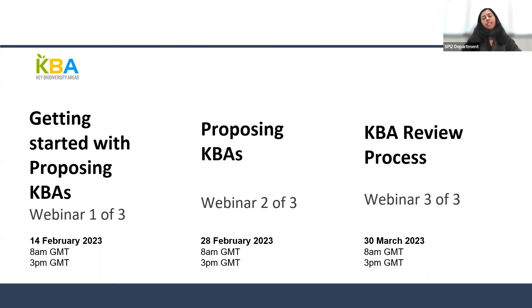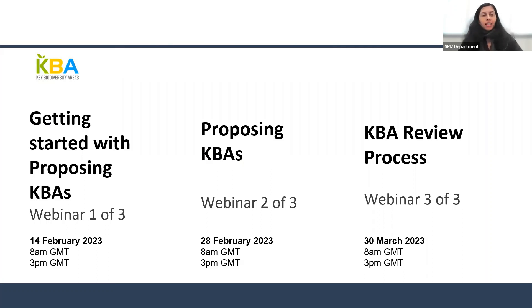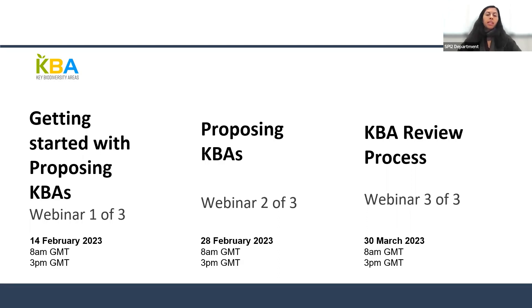As a brief reminder, this is the second part of the three-part webinar series designed to help you learn how to use the WDKBA to propose and/or reassess KBA sites. The target audience is prospective proposers or NCG members who have completed the online or in-person training and have started compiling data but are unsure how to interact with the online proposal portal. The purpose of this webinar is to help you understand how the proposal portal is set up and what information you will need to provide when proposing a site.